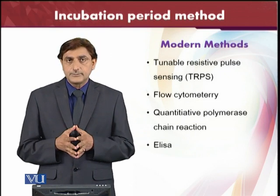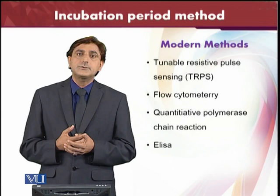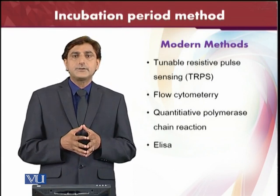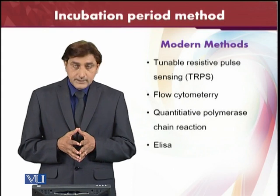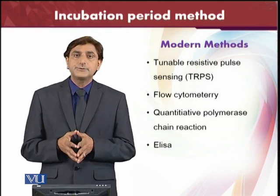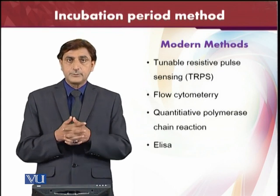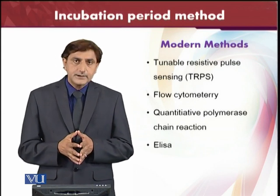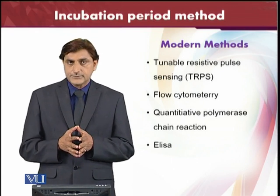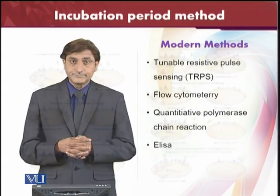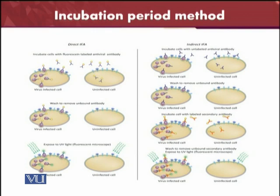There are also modern techniques used these days to detect virus presence. Resistive pulse sensing (TRPS) can be used, then flow cytometry, which uses specific antibodies to detect specific kinds of viruses. Then qPCR — quantitative polymerase chain reaction — can also tell us the quantity of specific kinds of viruses. ELISA (enzyme-linked assay) is also available. As an example of these procedures, we will look at ELISA.